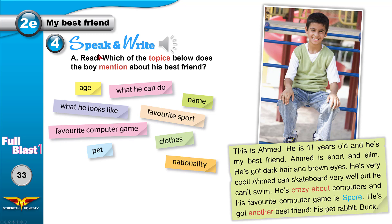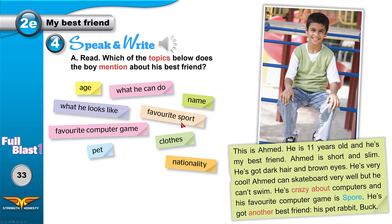Read: which of the topics below does the boy mention about his best friend? A topic is a subject that people talk about. Does he talk about his friend's age? What he can do? His name? What he looks like — meaning his appearance? His favorite sport? His favorite computer games? His clothes? His pet? His nationality?